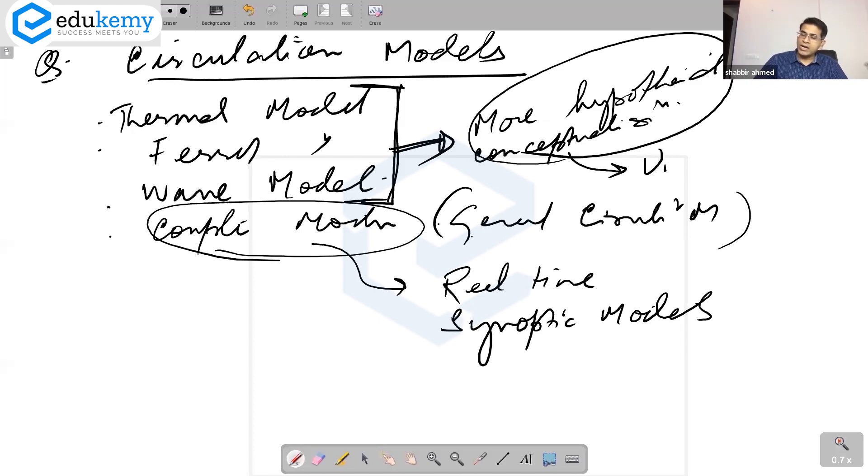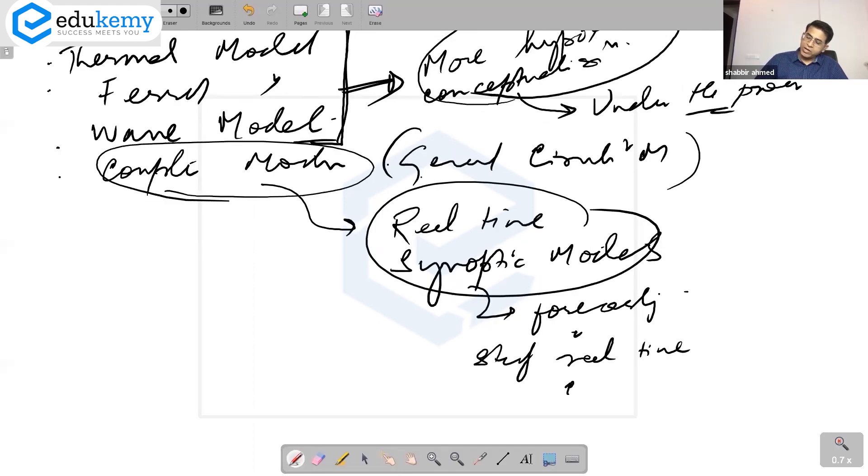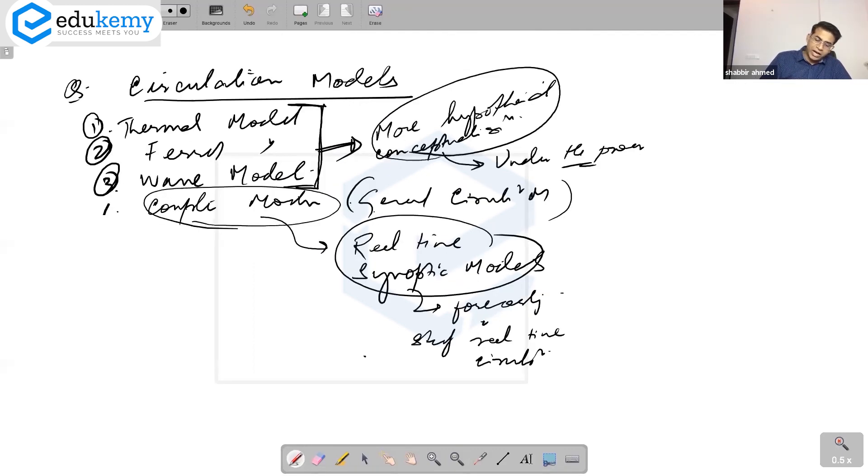And these are more important for forecasting and to study real-time circulations. These are the four models. Your syllabus talks about Ferrel's tricellular, but you have to know the other models also.